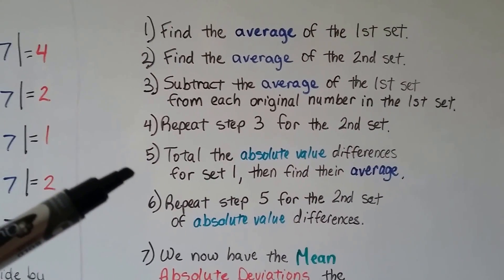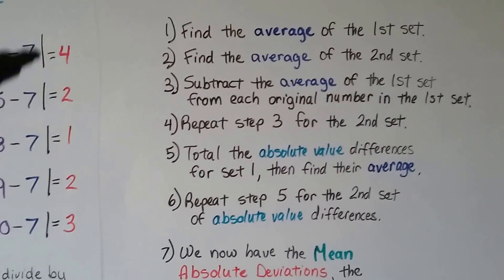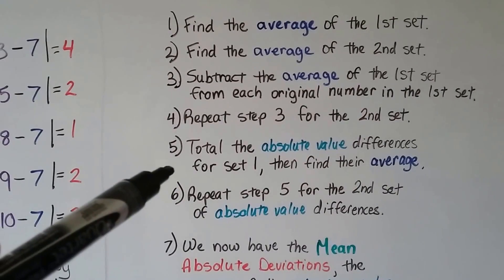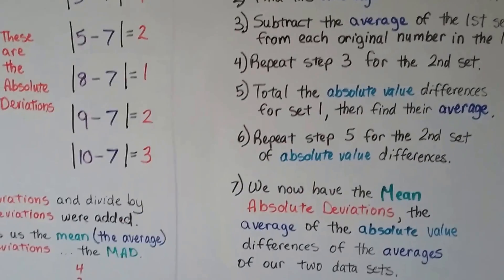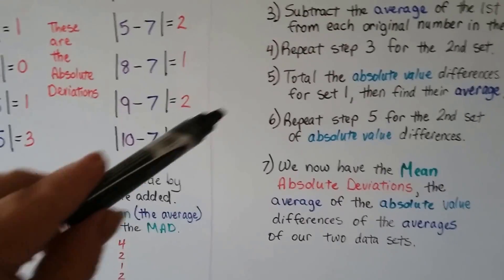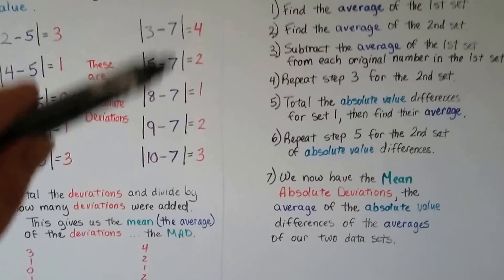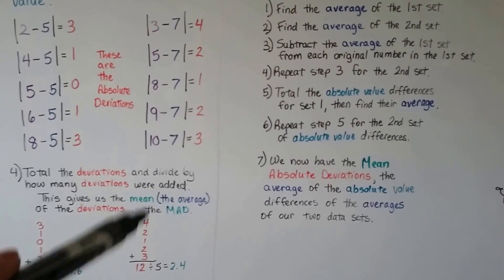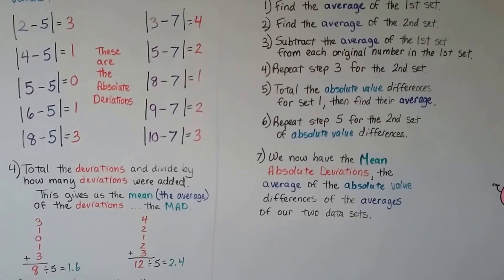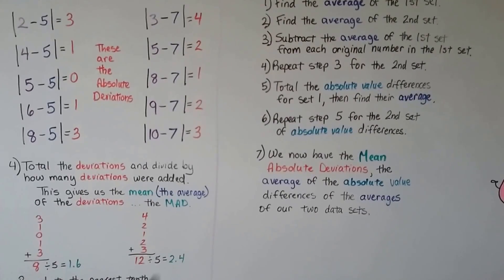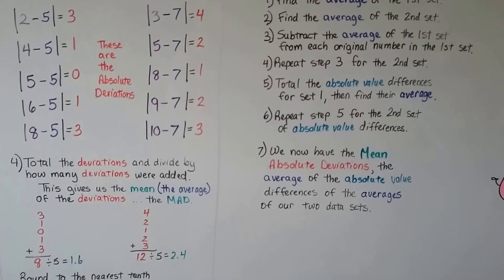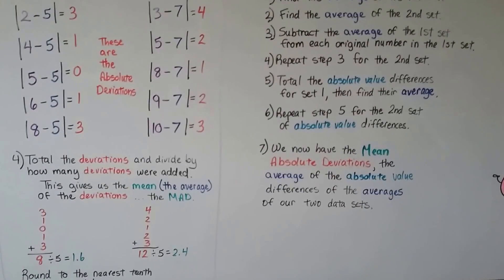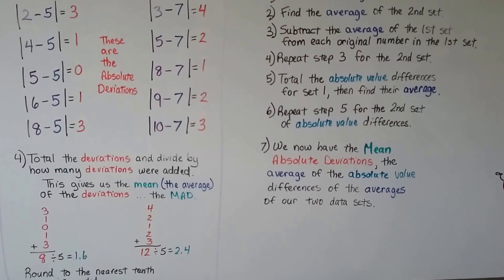Then we total the absolute value differences, these red ones, for set 1 and find their average. That's how we got the 8. And we repeat that step for the dataset 2. We got the 12. Now we have the mean absolute deviations, the averages of the absolute value differences of the averages of our two datasets.